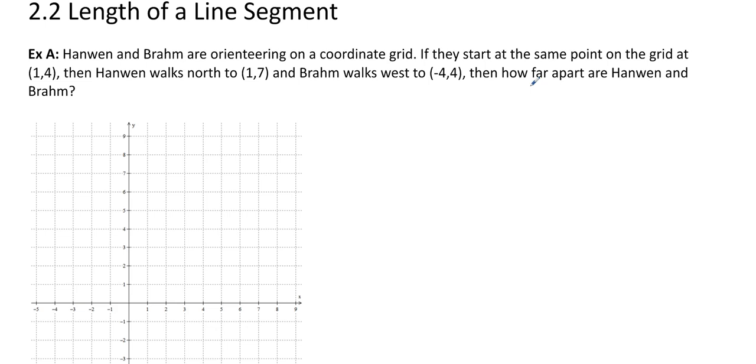Hanwin and Braum are orienteering on a coordinate grid. They start at the same point on the grid at (1,4), let's say it's here, and let's call that S.